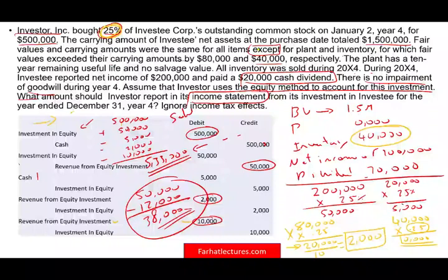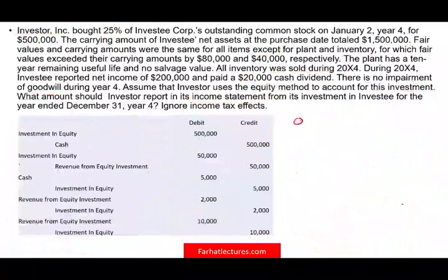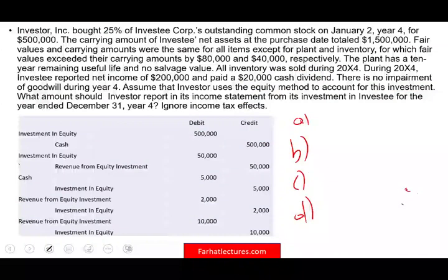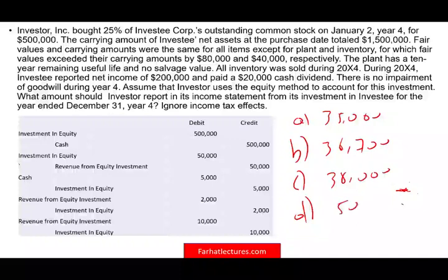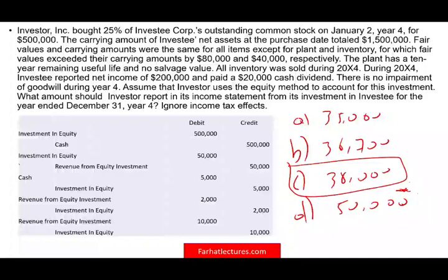This type of question could appear as a simulation or multiple choice on the CPA exam. For multiple choice, the answer choices might include $35,000, $36,700, $38,000, and $50,000 — with $38,000 being correct. As long as you understand the concept of equity method investment, it doesn't matter what format the question takes.